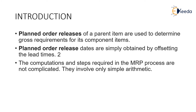The planned order releases of an item are used to determine the gross requirements for its component items — the raw materials, initial investments, and other things required. Planned order release dates are simply obtained by offsetting the lead times.